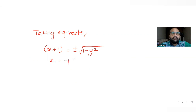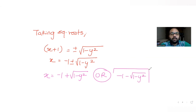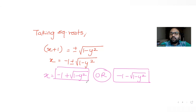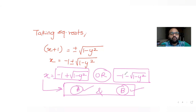So I have two expressions: x = −1 + √(1 − y²) or x = −1 − √(1 − y²). Looking at the options in this question, options A and B match these expressions. So both A and B are the correct answers.